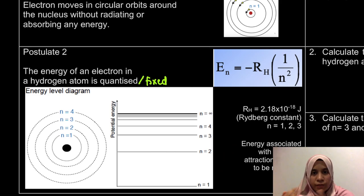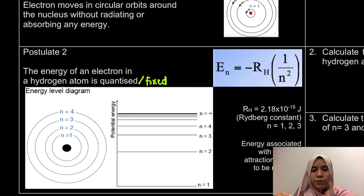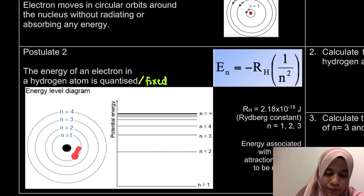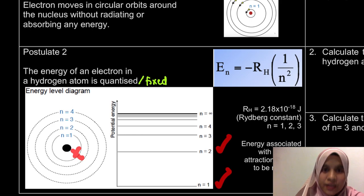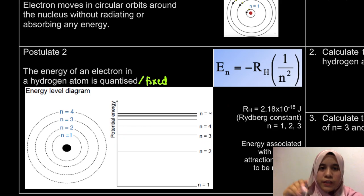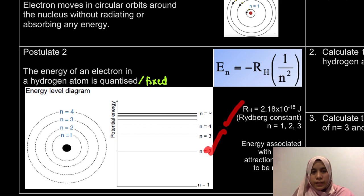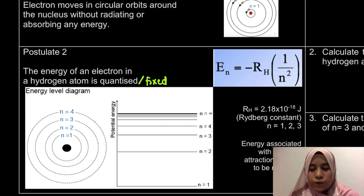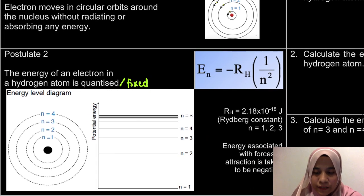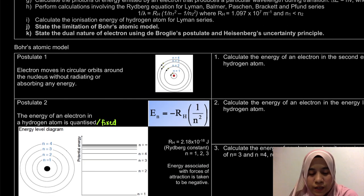We have learned about the formula, so now we're going to do a calculation. As mentioned, we can find the energy of an electron at any shell — n=1, 2, 3, 4. Let's do the calculation.